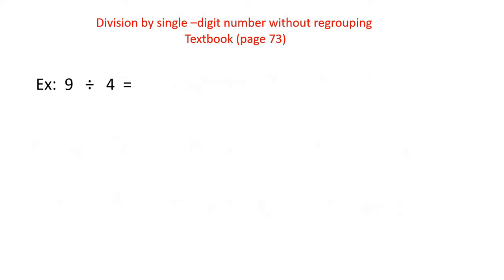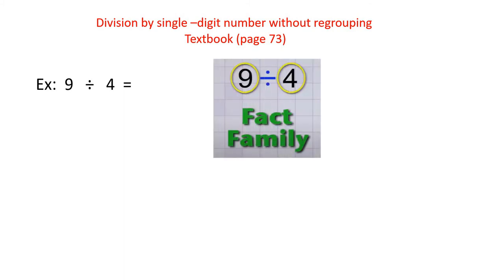If you have the number inside the times table, it will be very simple and easy. But what if the number is not a multiplication fact — it's not from the facts family? So you cannot find number 9 inside the times table for 4.